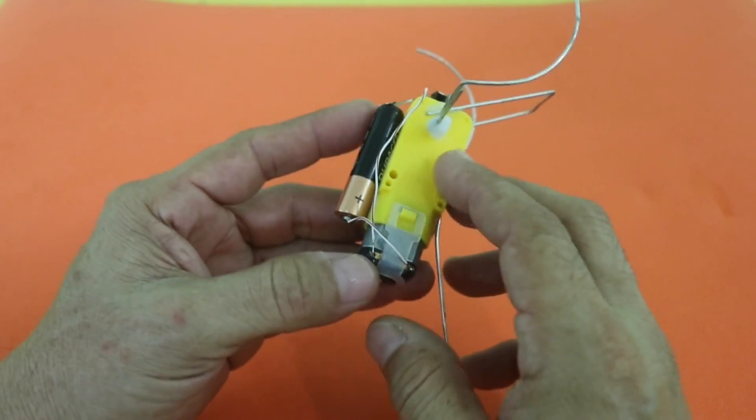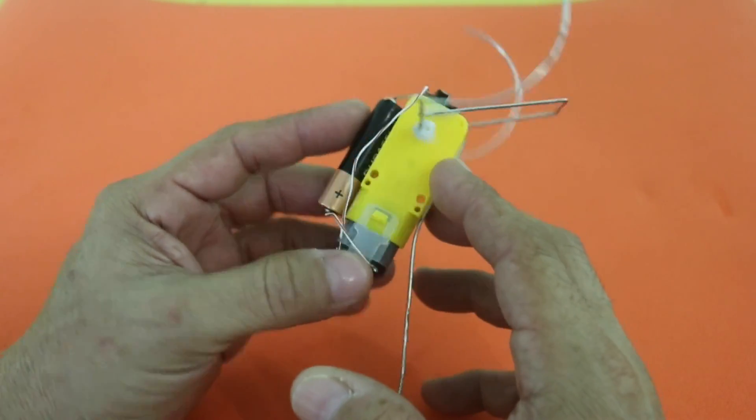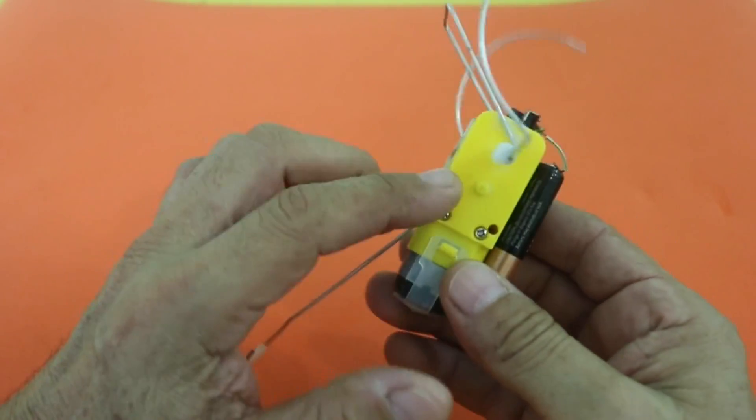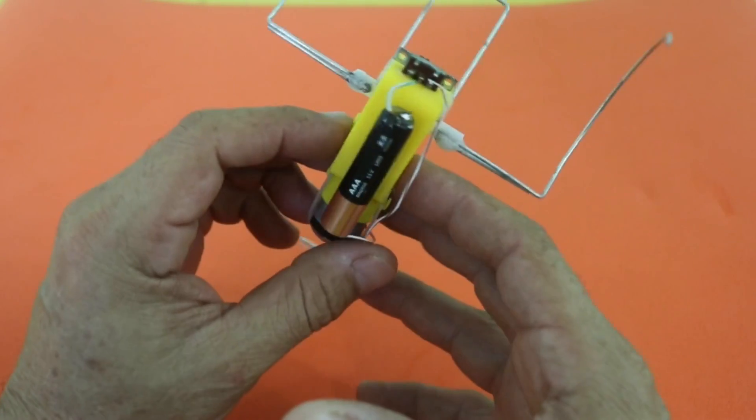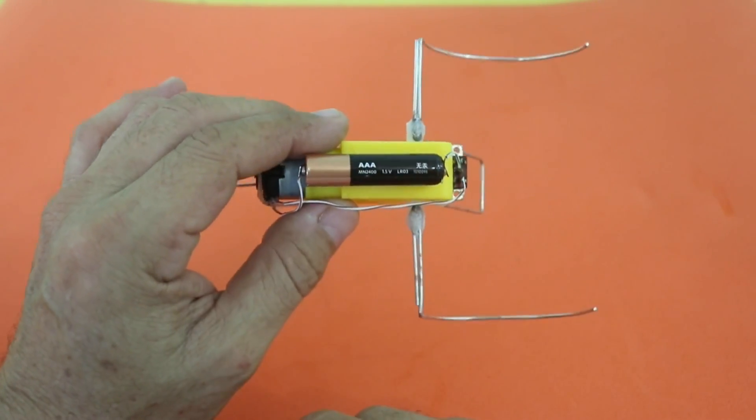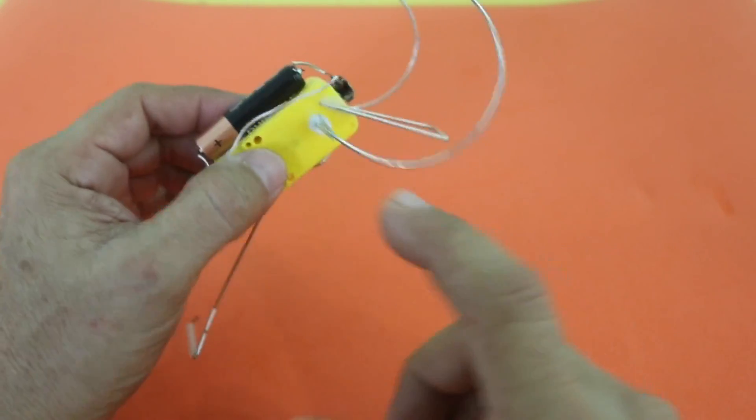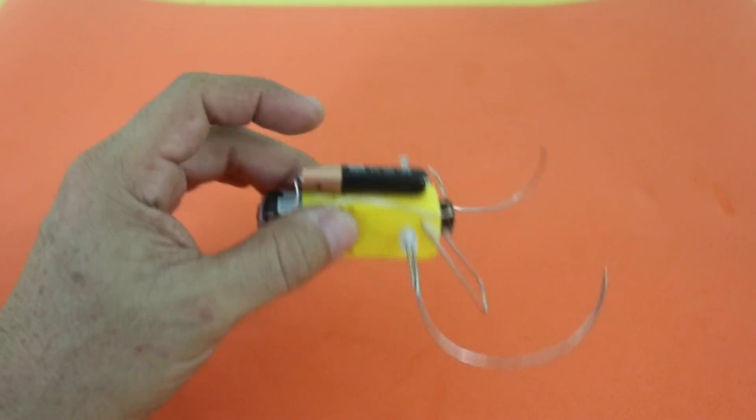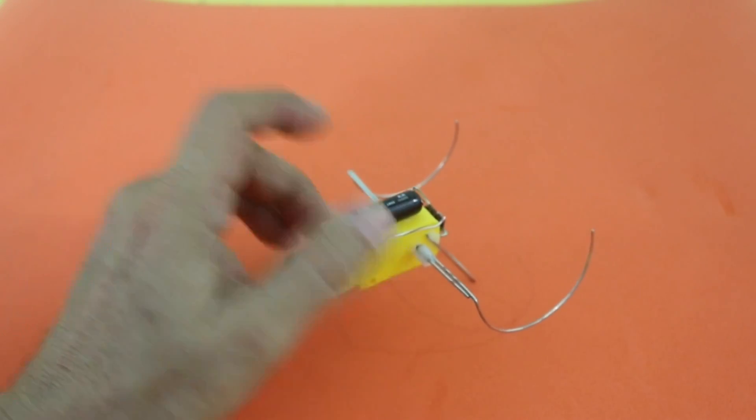You only need a geared motor. You can buy this at electronic houses or over the internet. They are very cheap. Also AAA battery and a switch and some wire. That's all you need to build your walking robot.